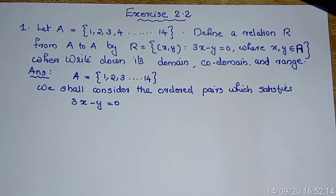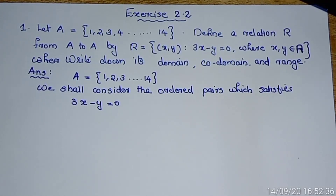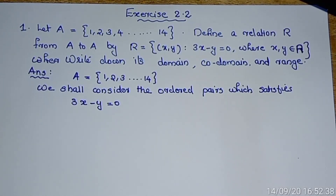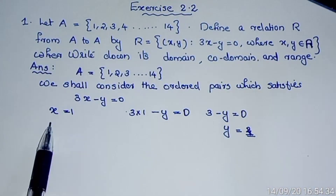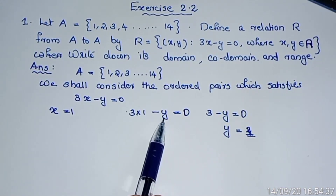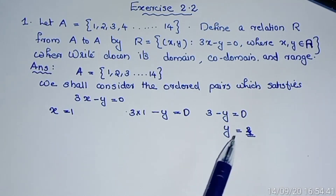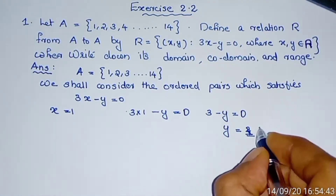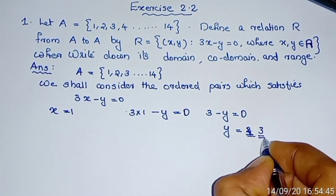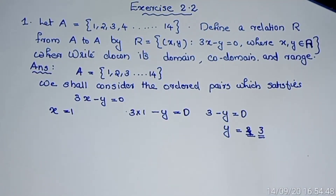A equals the set {1, 2, 3, ..., 14}. We shall consider the ordered pairs which satisfy 3x minus y equals 0, where x and y take values from the set A. When x equals 1: 3 times 1 minus y equals 0, that is 3 minus y equals 0, so y takes the value 3.